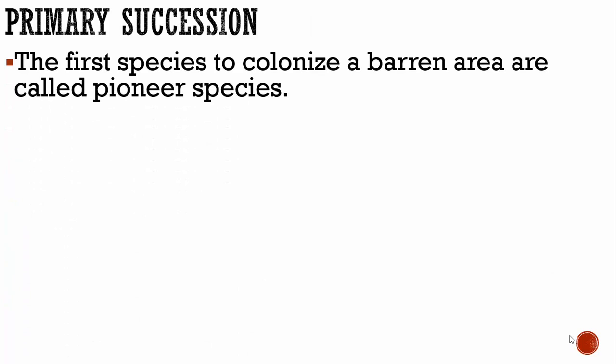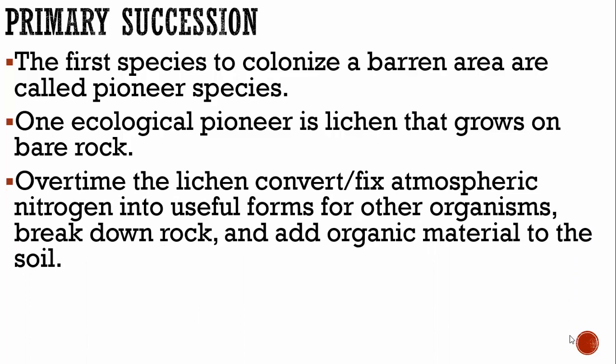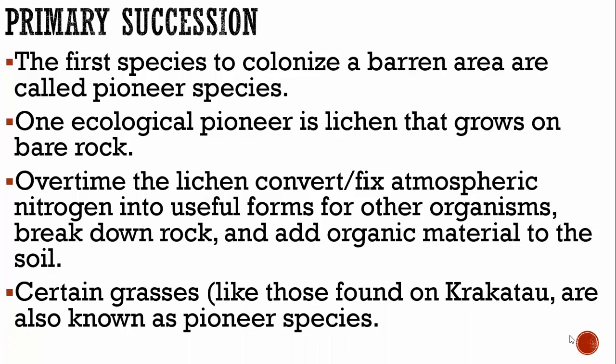In primary succession, the first species to colonize a barren area where there is no life are called pioneer species. One ecological pioneer is lichen that grows on bare rock. Over time, the lichen convert or fix atmospheric nitrogen into useful forms for other organisms. They break down rock and add organic material to the soil. Certain grasses, like those found on Krakatoa, are also known as pioneer species.